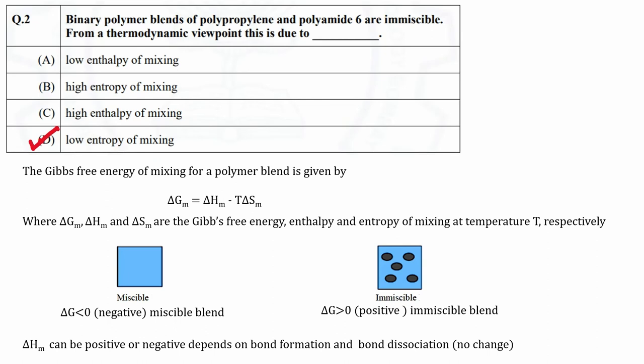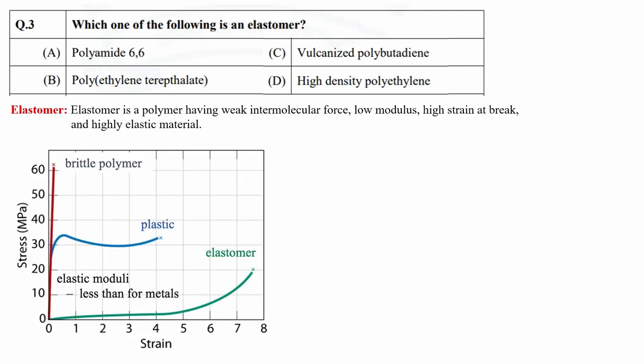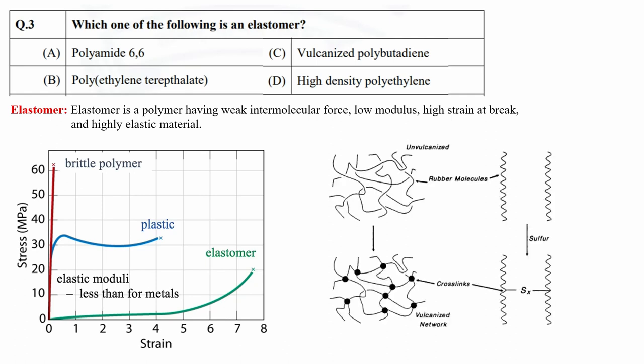Next question is among the given options, which one is an elastomer? An elastomer is a polymer with weak intermolecular forces, low Young's modulus, high elasticity, and high strain at break compared to thermoplastic materials. To improve modulus and rigidity, elastomers are cross-linked. The cross-linking process of elastomers is called vulcanization. So among the given options, vulcanized rubber is the correct answer. Rubbers are elastic, weak materials and they are vulcanized to improve mechanical properties.